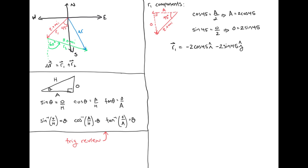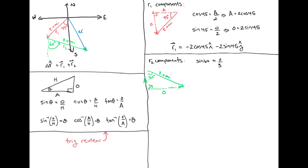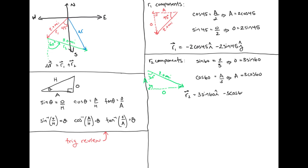I'm going to leave out the units for all of the vectors in this example just to keep things looking cleaner, but everything is measured in miles. Similarly, the components of r2 may be found by noting that sine 60 is equal to o over 3, which means o is equal to 3 sine 60. The y component may be found by noting that cosine 60 is equal to a over 3, or a is equal to 3 cosine 60. The y component is negative since it goes down, and the x component is to the right, so it's positive. So r2 may be written in component form as 3 sine 60 i-hat minus 3 cosine 60 j-hat.